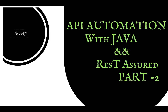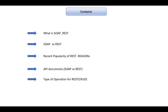Hello guys, welcome to this tutorial. This is Part 2 of API automation with Java and Rest Assured. In this section we will be discussing very commonly asked questions that come to mind when you start learning API automation. I'll be covering what is SOAP, what is REST, the basic differences between them, why REST is popular nowadays, and what documents the developer will be providing you.